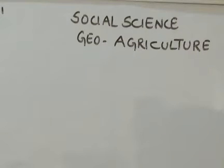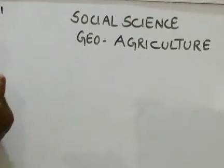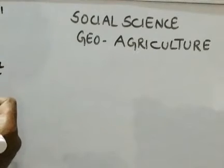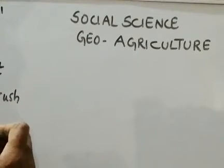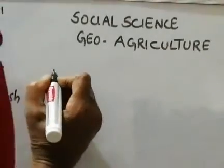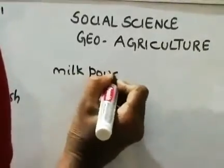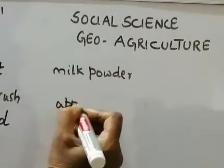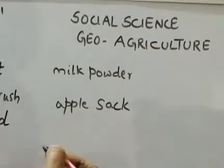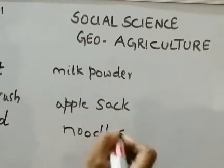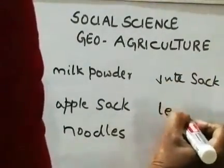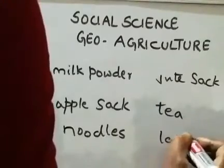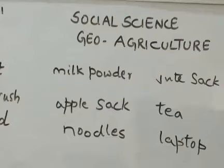I will give you one small exercise. Put a tick on the items which are made from crops. The items are: shirt, toothbrush, bread, milk powder, apple sack, noodles, jute sack, tea, and laptop. This is a brainstorming exercise, children.